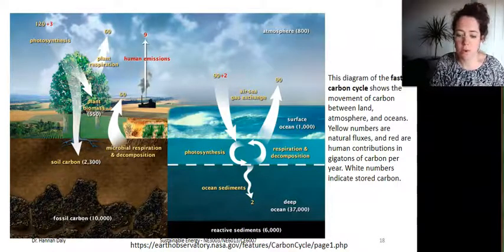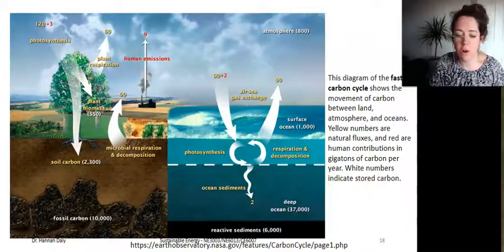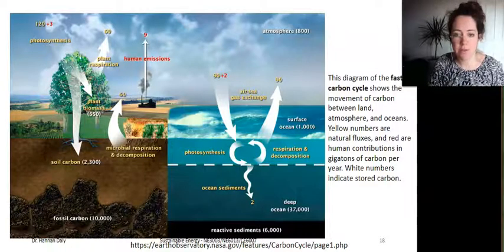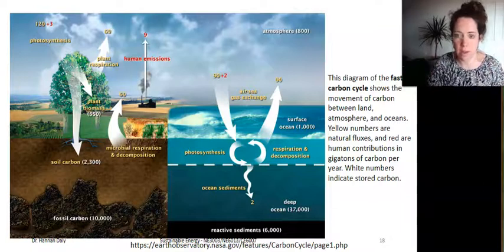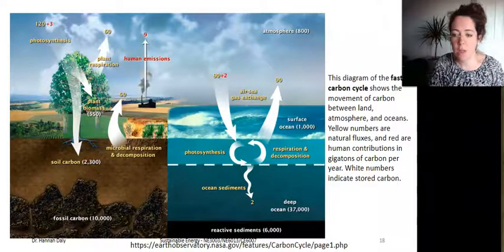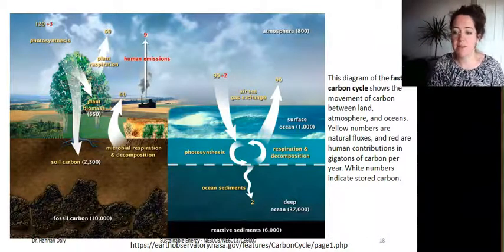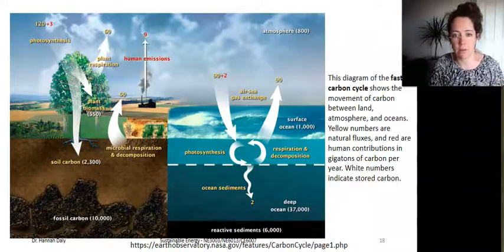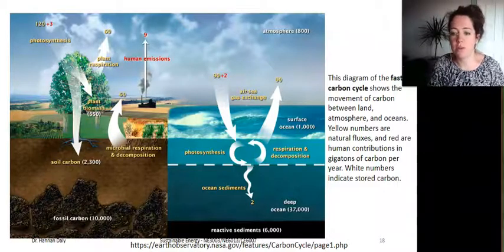Over the long term, the carbon cycle seems to maintain a balance that prevents all of Earth's carbon from either entering the atmosphere — which is what happens on Venus, where the carbon cycle ends in very high levels of CO2 — or from being stored entirely in carbonated rocks. This balance helps to keep Earth's temperature relatively stable, like a thermostat, because of the greenhouse effect. That thermostat works over hundreds of thousands of years as part of the slow carbon cycle.